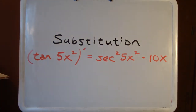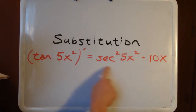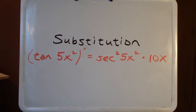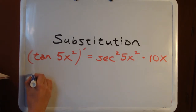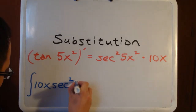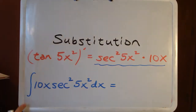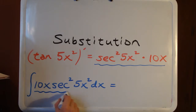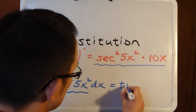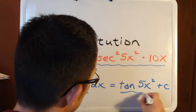So this is how derivatives look using the natural technique. If we rewrite this using integral notation, that would mean that the anti-derivative of this function gives us back tangent of 5x squared plus C. So we would write it as the integral of 10x times secant squared of 5x squared dx, and the anti-derivative of that equals tangent of 5x squared plus C.